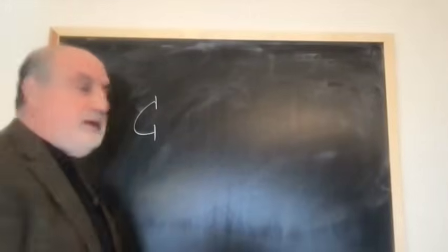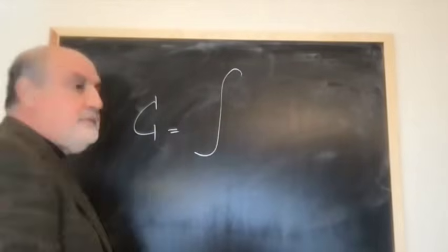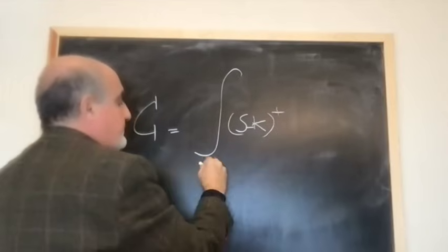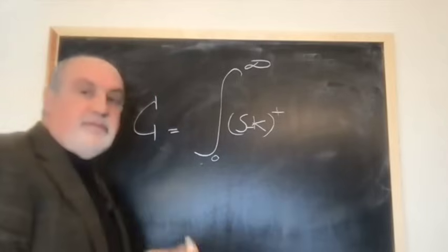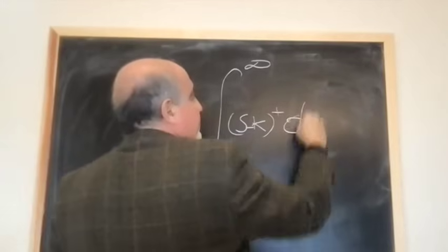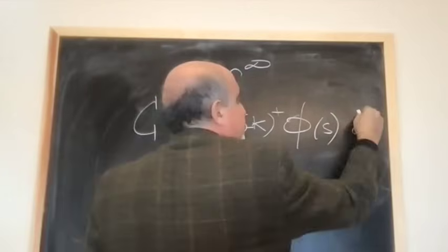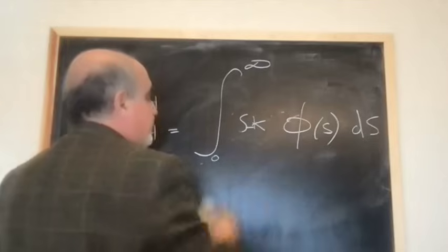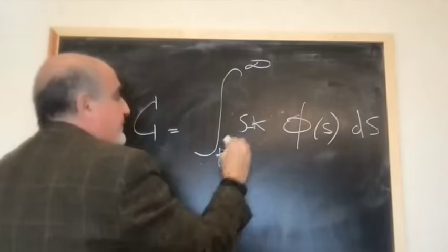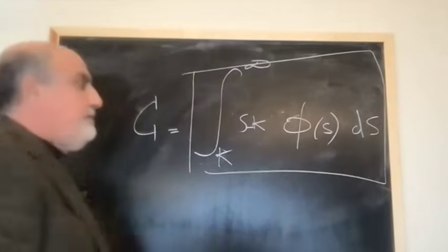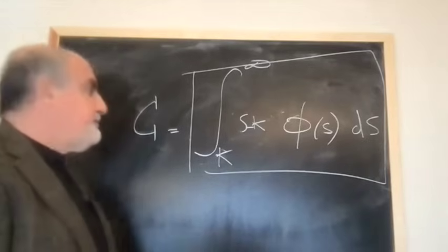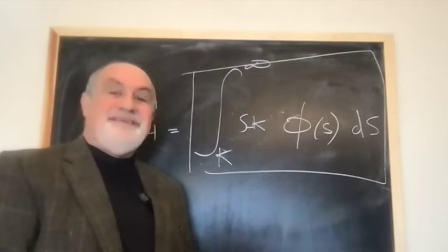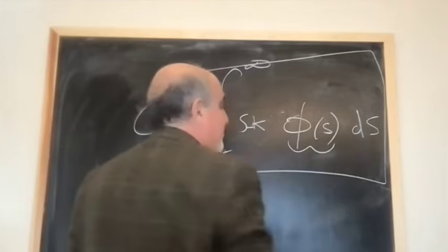Call strike K is going to be the integral of S minus K plus between zero and infinity using Gaussian, so basically phi of S, the probability distribution of S, dS. Simply, or you can remove that change of function to S minus K because it's going to be over zero elsewhere from K to infinity. So that's simply the option price.